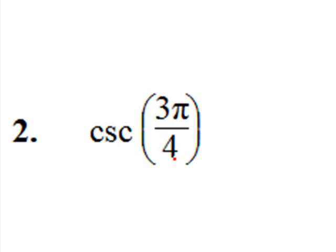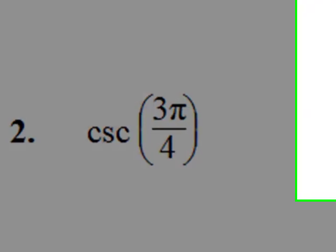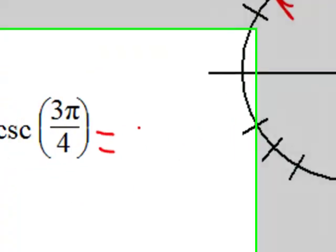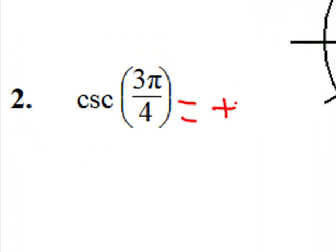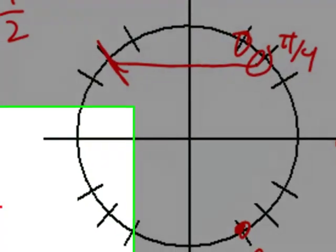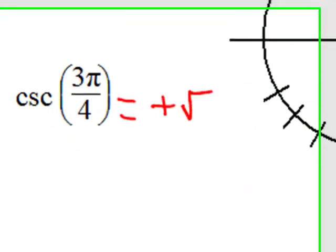Cosecant of three pi over four. That's three-fourths pi, not quite a full pi. That is right here in quadrant two. In quadrant two, the cosecant is positive, along with the sine. And three pi over four relates to pi over four.